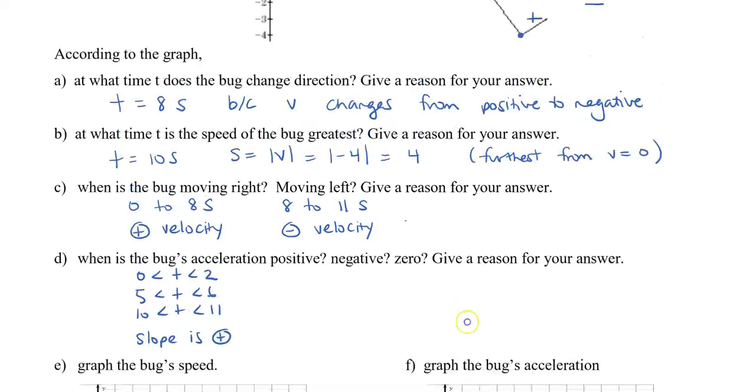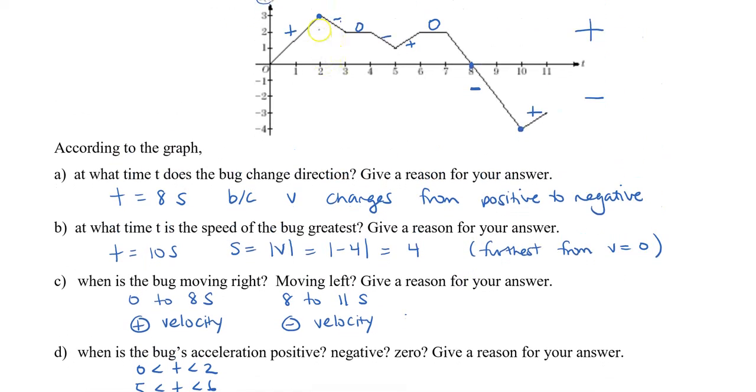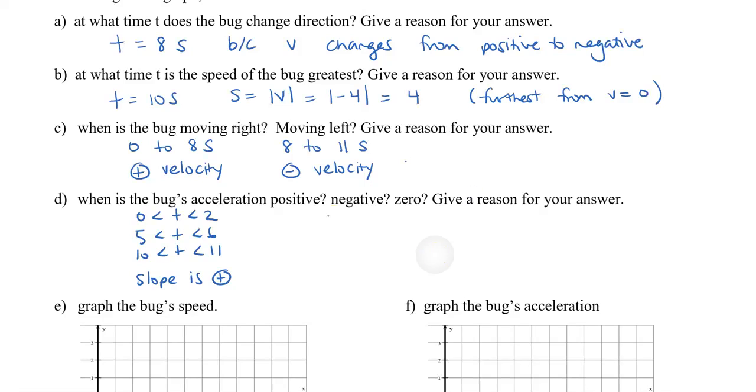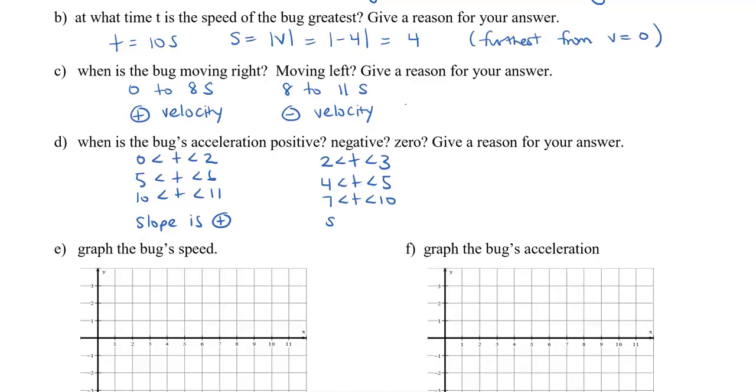When is the acceleration negative? That's where all the negative slopes occur. From 2 to 3, 4 to 5, and then 7 to 10. And that's because the slope is negative.